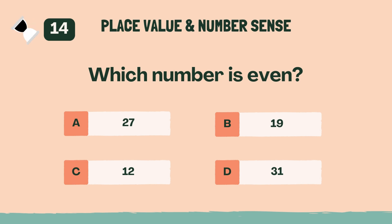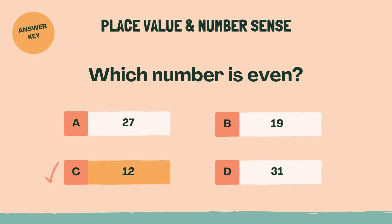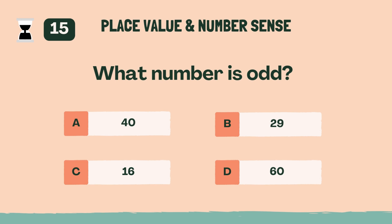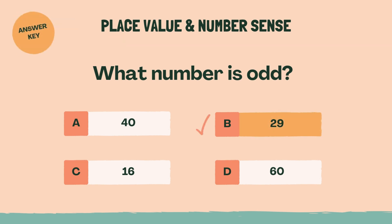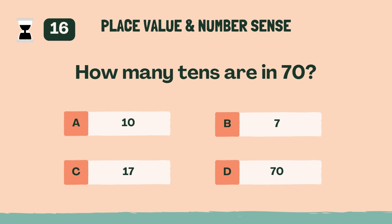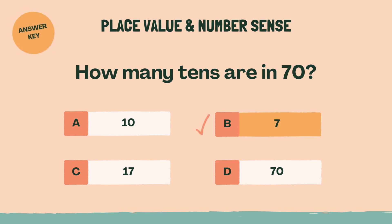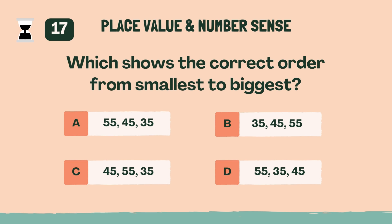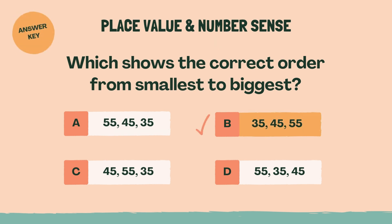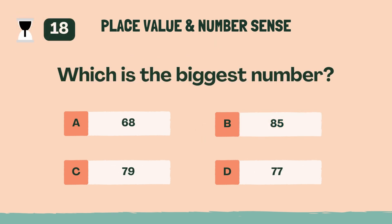Which number is even? C, 12. What number is odd? D, 29. How many tens are in 70? B, 7. Which shows the correct order from smallest to biggest? B, 35, 45, 55. Which is the biggest number? B, 85.